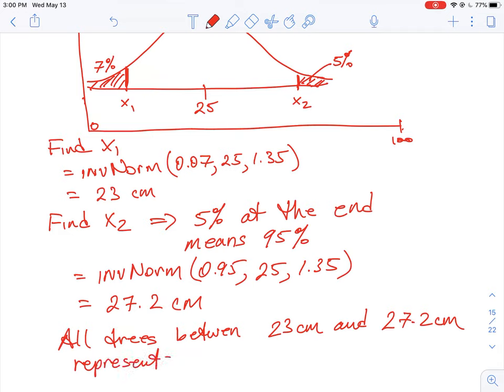So how much it represents, there's seven on the left and five there, so it's 12. So we take away the two edges, it represents 88% of all trees.